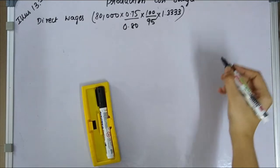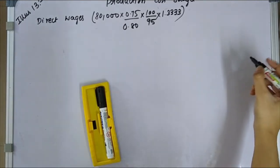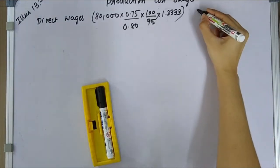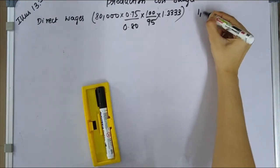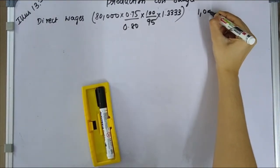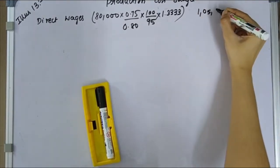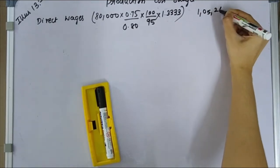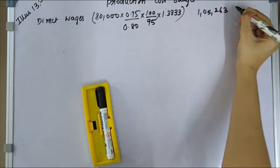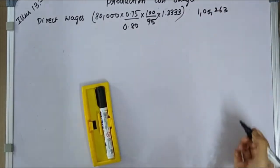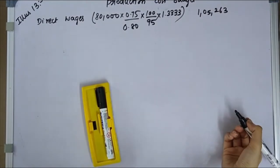So this gives you 1,52,63 — that is the computed direct wages figure for the forthcoming year.